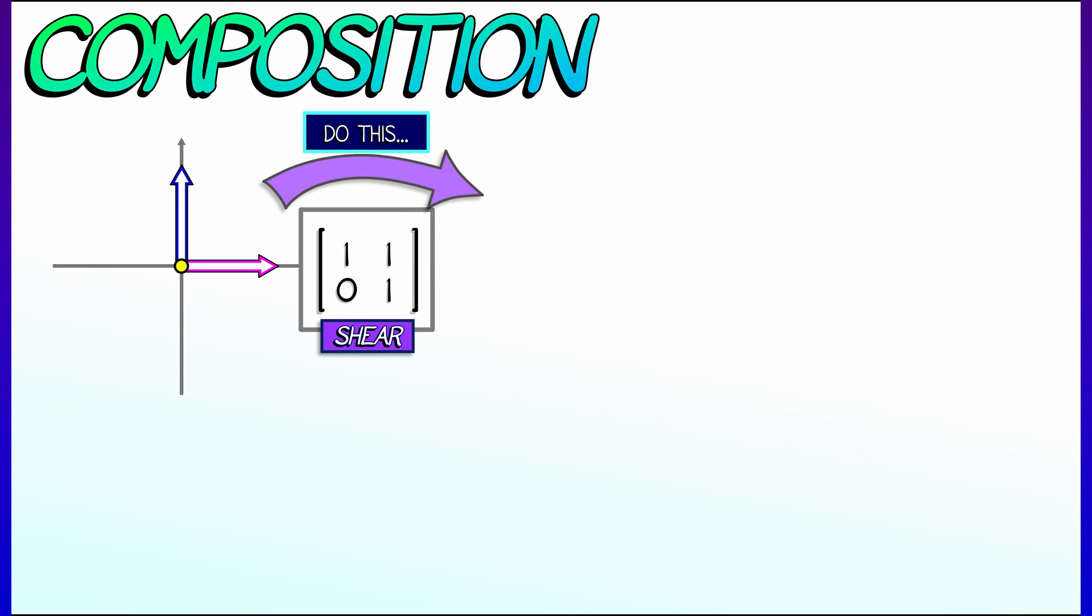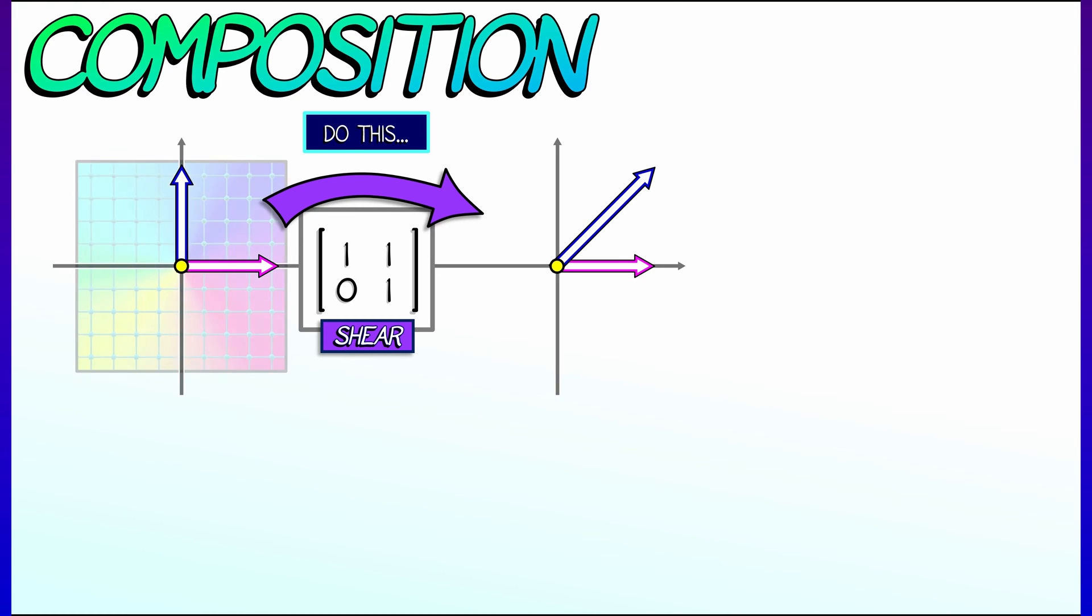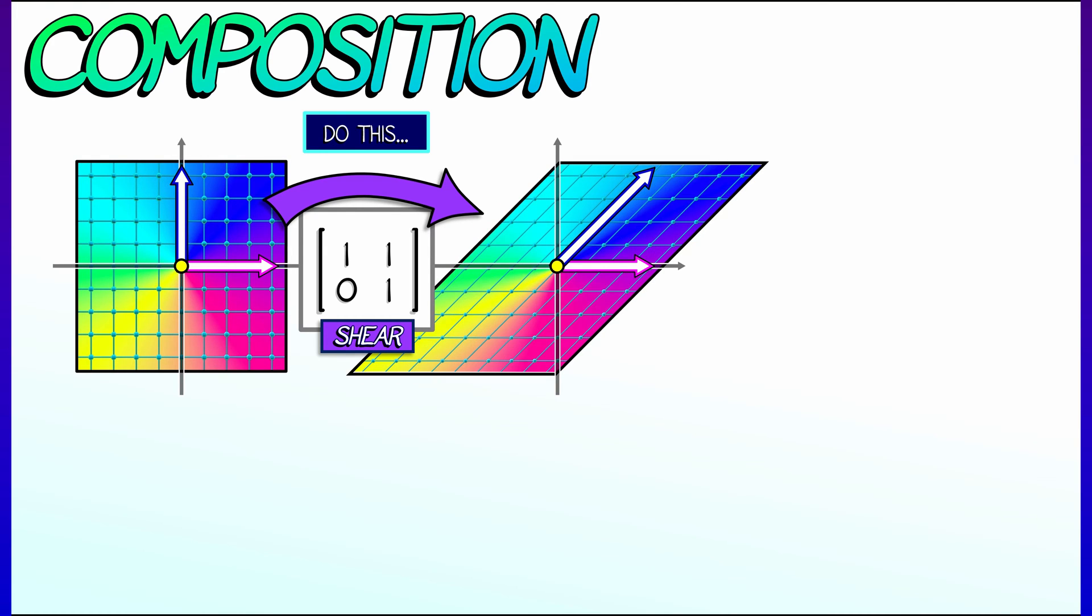Let's consider a simple example. Let's say I've got a shear, 1, 1, 0, 1. We know what that does, right? That keeps the horizontal axis, shears the vertical, and then by linearity, it does that thing.